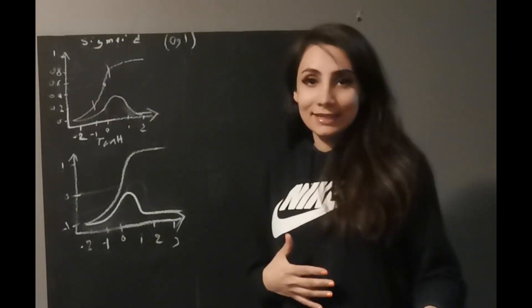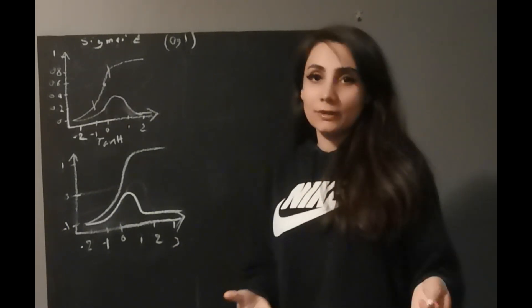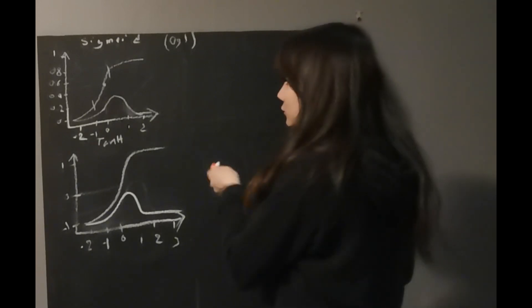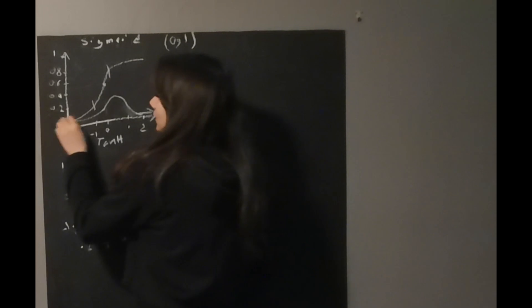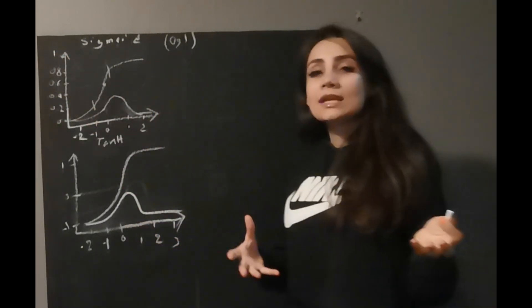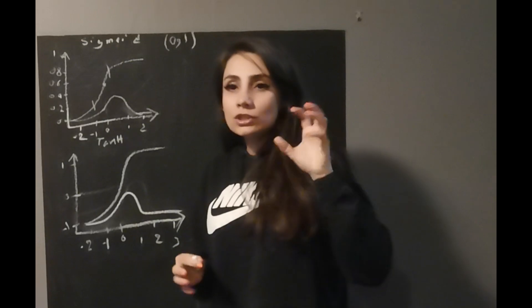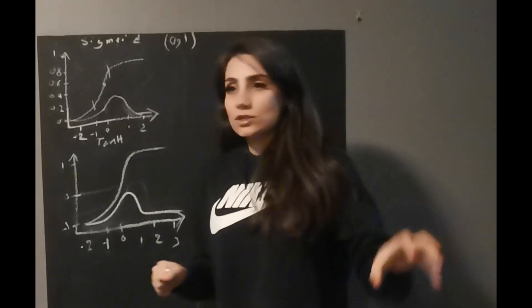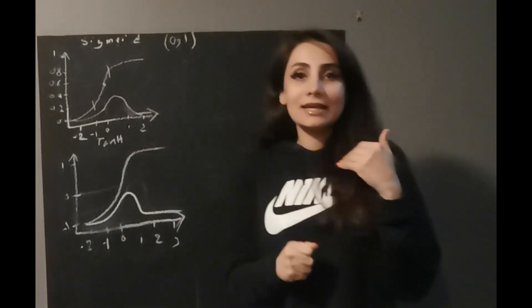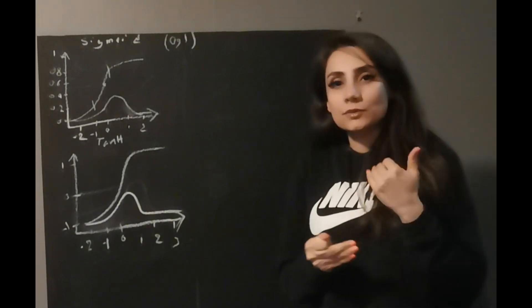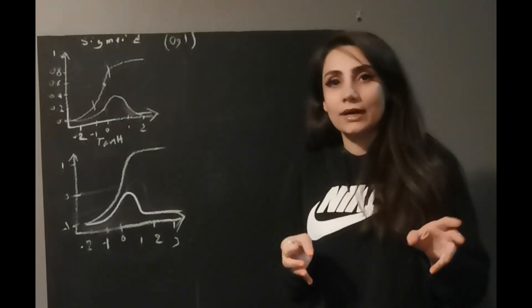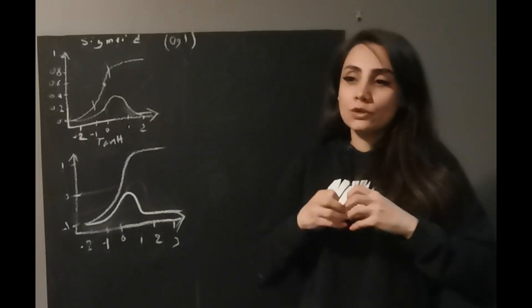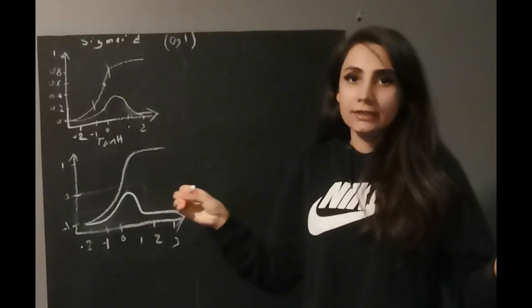Now let's talk about what they can do and where you should use them. For sigmoid, as you can see, we start from somewhere around 0 to 1. So any output that comes from a neuron with an activation function of sigmoid can only produce values between 0 and 1 — not exactly 0 and 1, it's going to travel close to them.